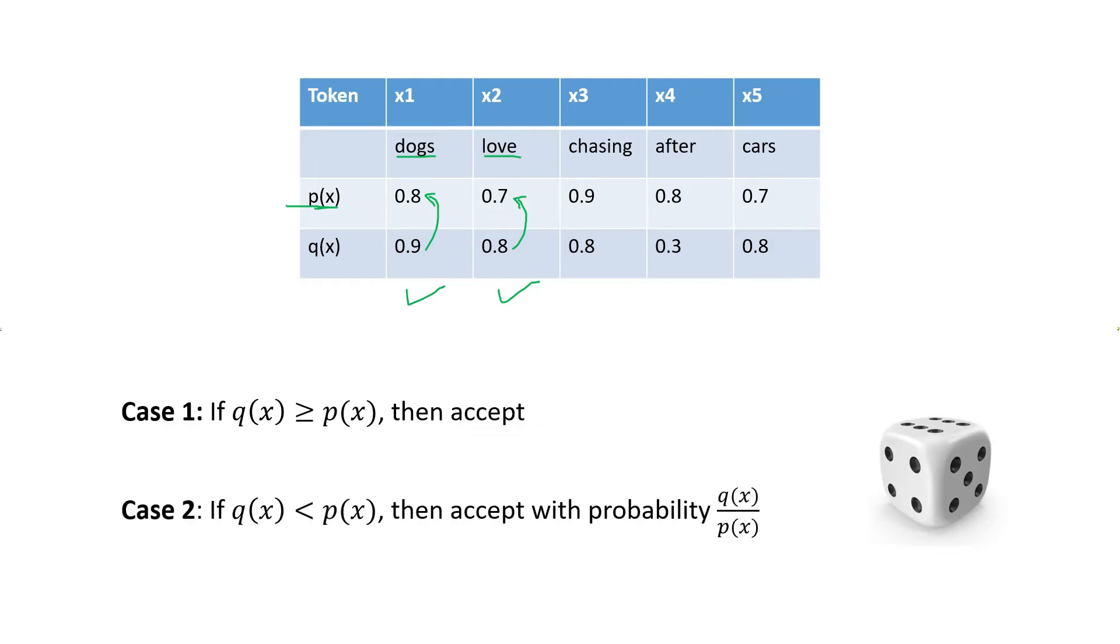But what happens if q(x) is not greater than p(x), then we enter into case two. If q(x) is smaller than p(x), then we roll our dice to determine whether we want to accept the token or not. And we accept it with the probability of q(x) over p(x). So for the third token, q(x) is greater than p. So we accept it with probability 0.8 over 0.9, which is around 90% chance. And let's say that we get lucky and we do accept this token. Now, the fourth token, we have a similar situation that q is less than p. So the probability of acceptance here is 0.3 divided by 0.8. And let's say this time it gets rejected.